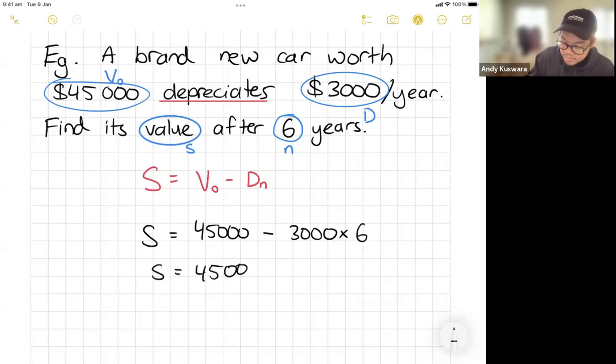And that's going to end up becoming, you can use a calculator for this, or you can figure it out in your head. I'm going to try my best here. So $3,000 times six is $18,000. And that means $45,000 take away $18,000 is $27,000, I believe. So that means that is its value after six years.